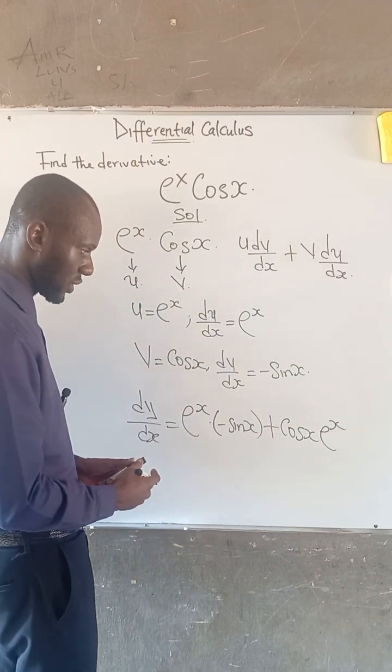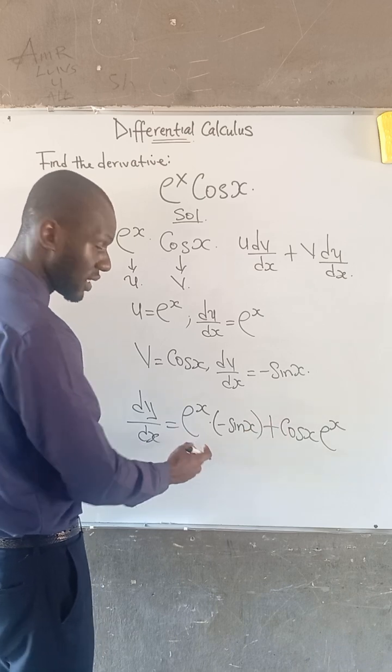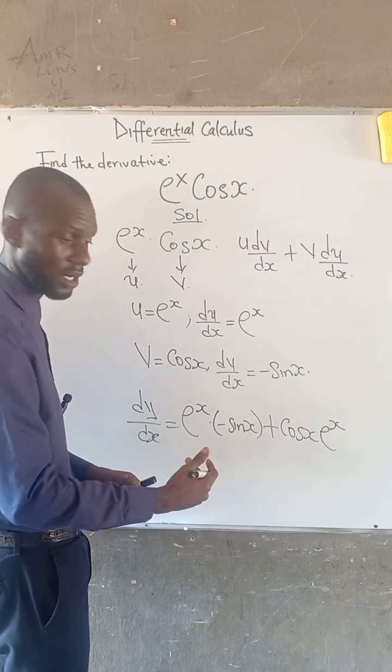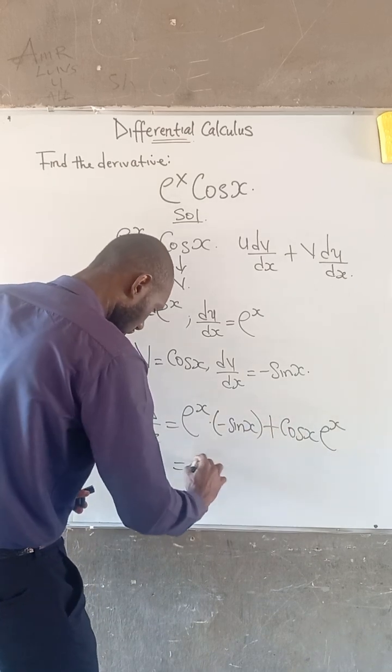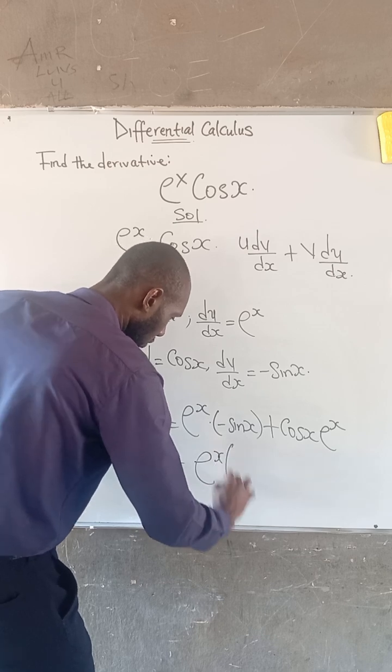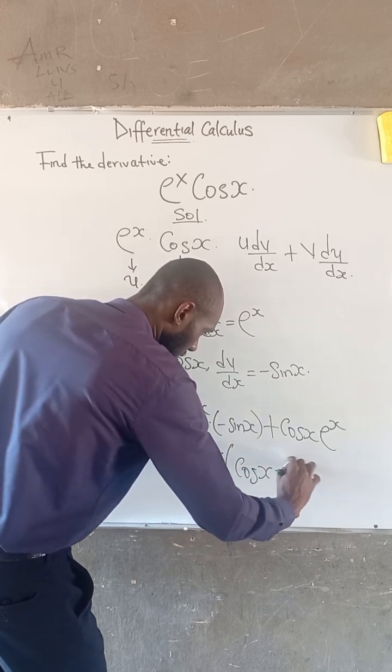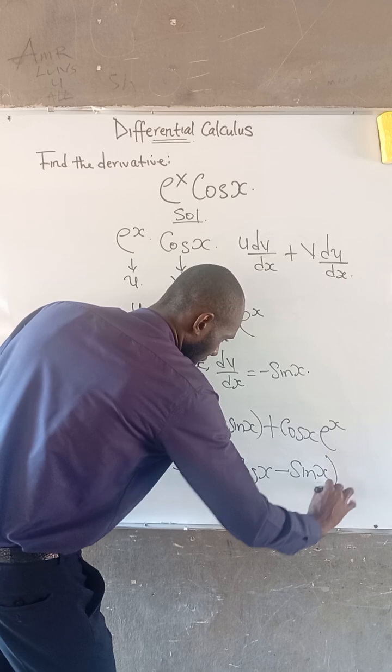Looking at this equation, we can find that on the right-hand side, e is common, so we can factor out e. This becomes e to the power of x, full bracket, cos x minus sin x.